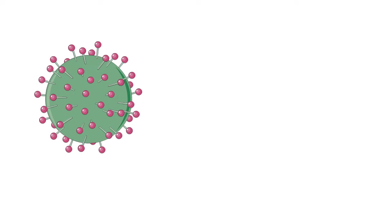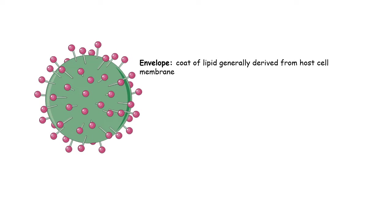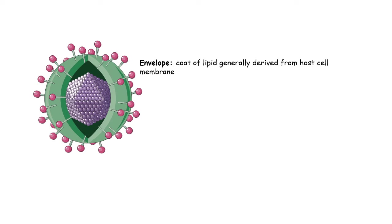Let's go through the overall structure of a virus. First of all, they have a coat — like a jacket — and this jacket is known as the envelope. It is mostly made up of lipids derived from the host cell membrane. Inside the envelope there is a proteinaceous coat known as the capsid, which encases the viral genome. If you remove the capsid, what you end up with is the viral genome.